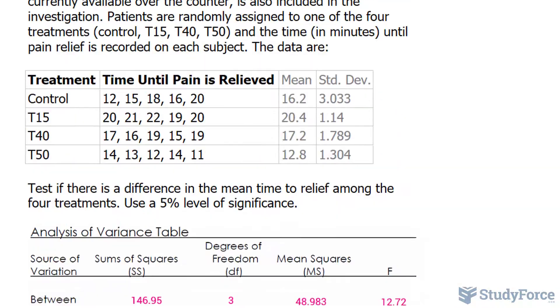Let's take a look now at these four groups. The largest mean is T15 at 20.4, and we will be comparing that with the smallest mean being T50, which is 12.8. So T15 versus T50. The null hypothesis tells us that their means are the same. The alternative tells us that the means are not the same.